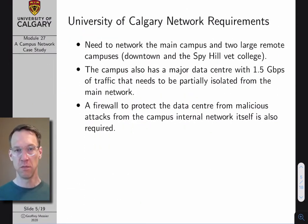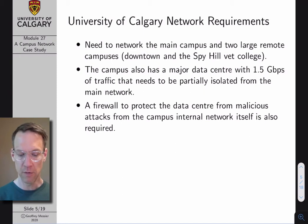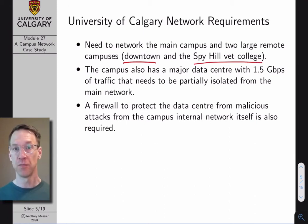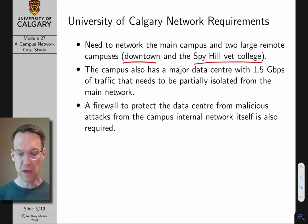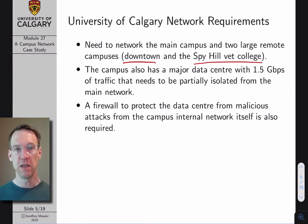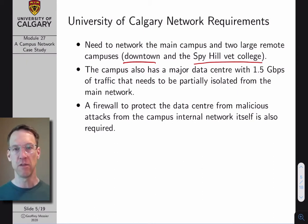The University of Calgary is also very physically distributed. In addition to the main campus, we have two remote campuses: a downtown Calgary campus and the Spy Hill Vet College, both many kilometers away and needing to be incorporated into the network. The campus also has a major data center with 1.5 gigabits per second of average data traffic that needs to be supported and secured. And of course, we need a firewall to protect the overall network from the broader internet. There are a lot of moving pieces.